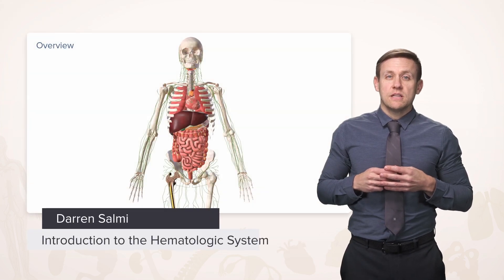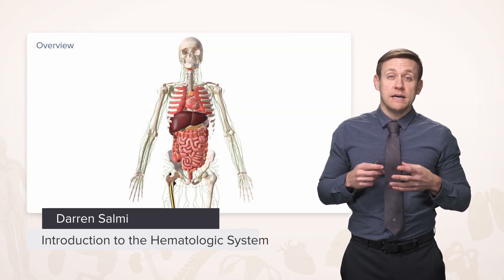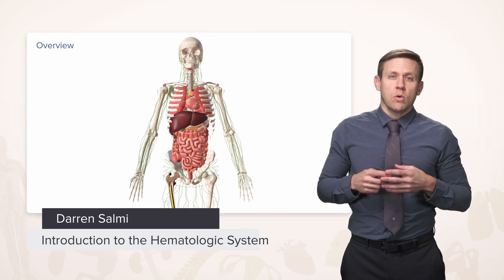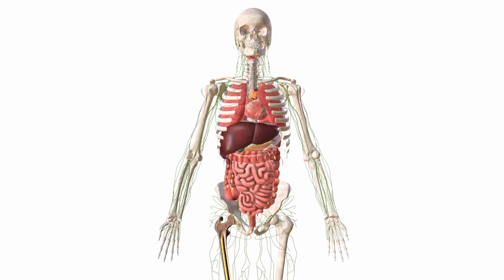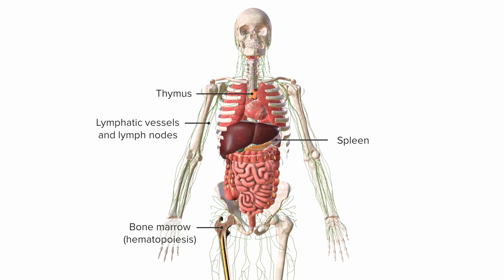Now let's take a look at the anatomy of the hematologic system. When we think about the hematologic system, we typically think about blood and where it's made, or hematopoiesis, and a lot of that is carried out in the bone marrow. But there are other important structures such as the thymus and the spleen, as well as various lymphatic vessels and lymph nodes scattered throughout the body, and other lymphoid tissue associated with mucosa called MALT.